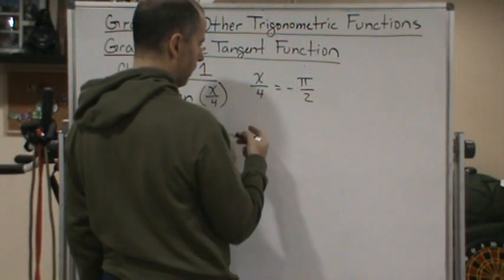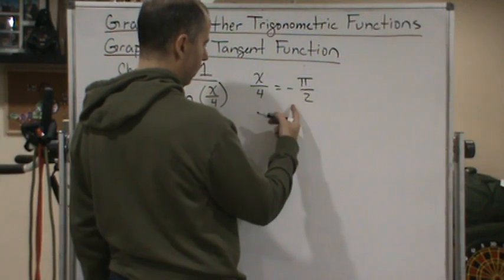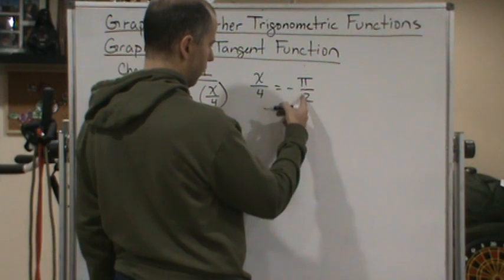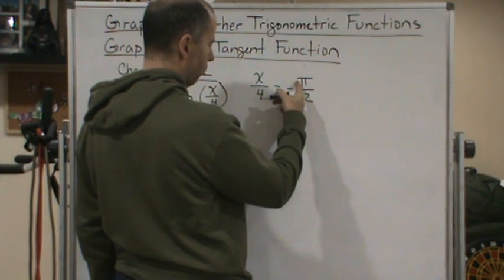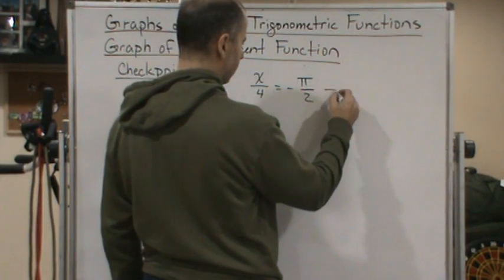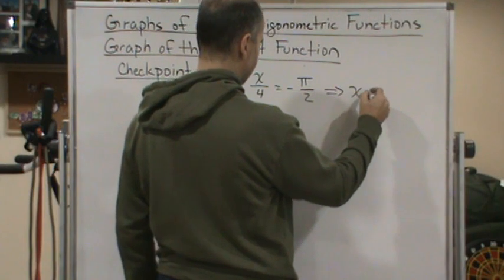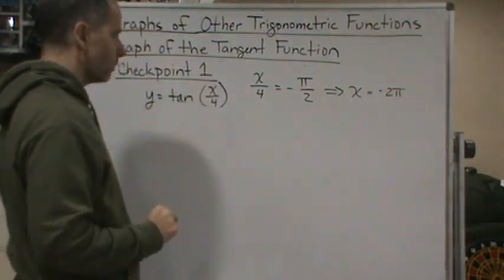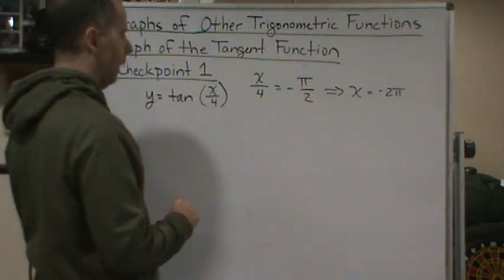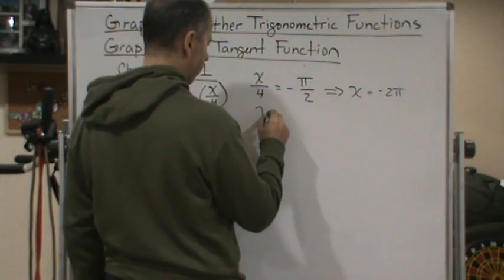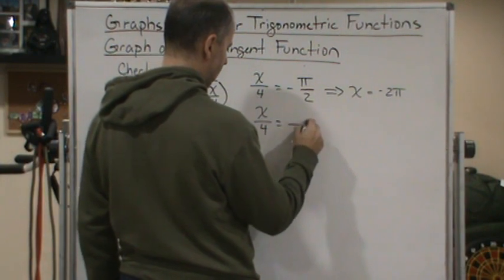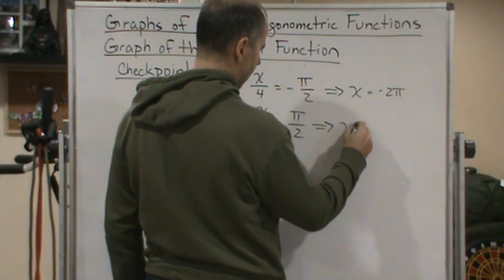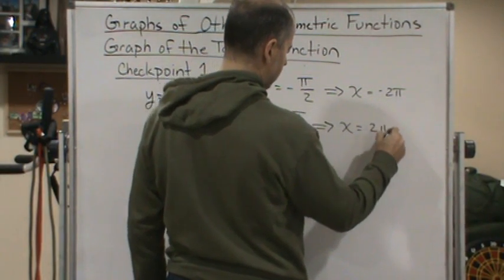Well, in order to make this proportion equal, to find out what x is equal to, we're going to change this to a 4, which means we have to multiply this by 2. So that means this implies that x is going to equal negative 2π. And then similarly, x/4 is equal to positive π/2 is going to give us that x is equal to positive 2π.